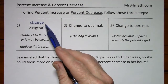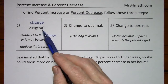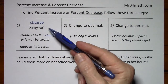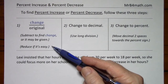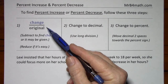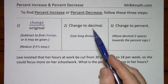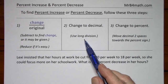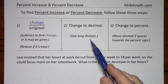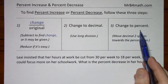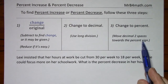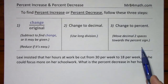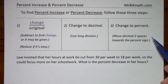You put the change over the original. This gives you a fraction. You want to reduce if it's easy, just so you have smaller numbers to work with. Then you change this fraction to a decimal using long division. And then you take that answer and change it to a percent — you move the decimal two spaces towards the percent sign in order to put in the percent sign.